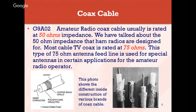75-ohm antenna feed line is used for special antennas in certain applications for the radio amateur. A typical coaxial cable consists of a center conductor, a dielectric — in this case polyethylene — a copper braid shield (though aluminum braids exist), and then the outer jacket.